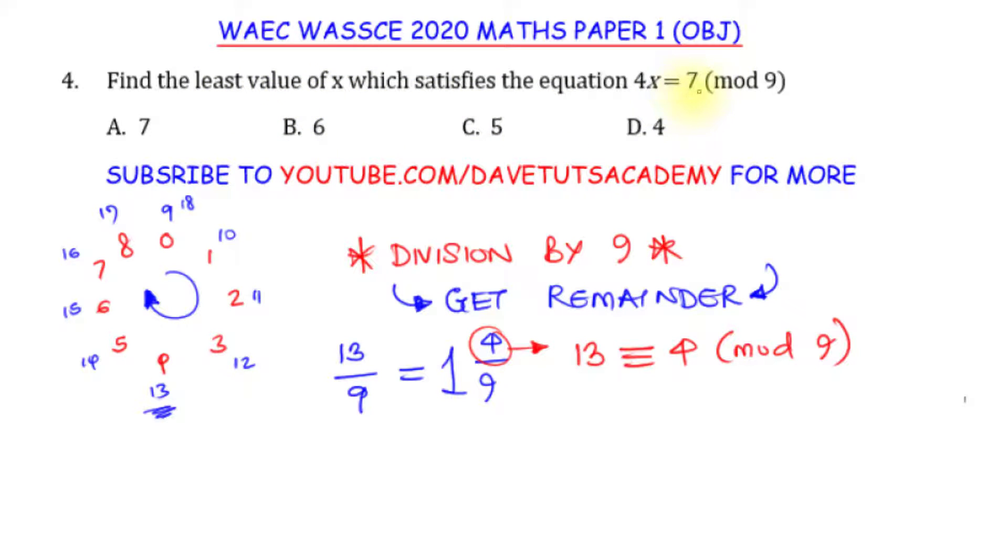So since they are talking about the least value of x, then this particular 7, we need to actually add to 9. Because like the case of 13 and 4 that I'm talking about, if you add 4 to 9, you're actually going to get 13.